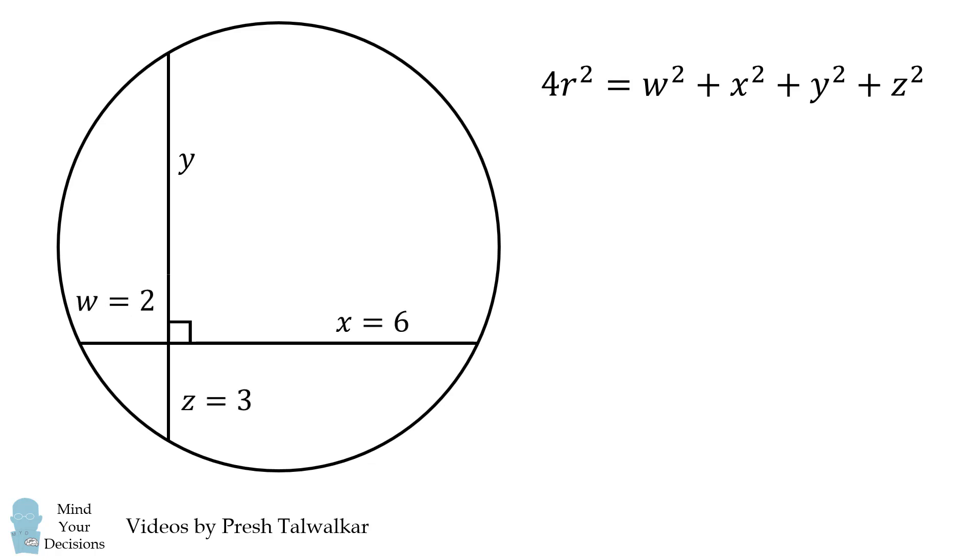We're given three of the lengths: w is equal to 2, x is equal to 6, and z is equal to 3. What's the value of y? We can solve for y using the power of a point or the intersecting chords theorem. W times x is equal to y times z. We can then substitute in values and solve that y is equal to 4.